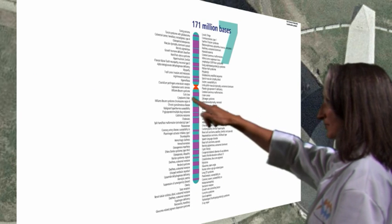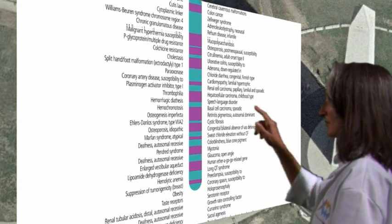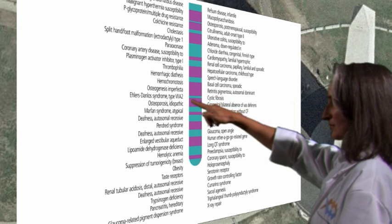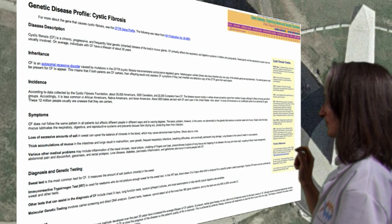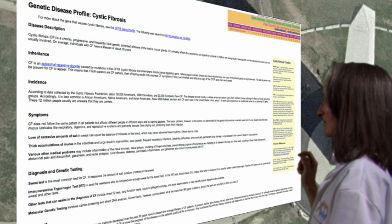Let's enlarge chromosome 7 and look at one gene thereon. As you can see, the gene that causes cystic fibrosis is here. On other pages, you can see genetic disease profiles. Here is the cystic fibrosis profile.